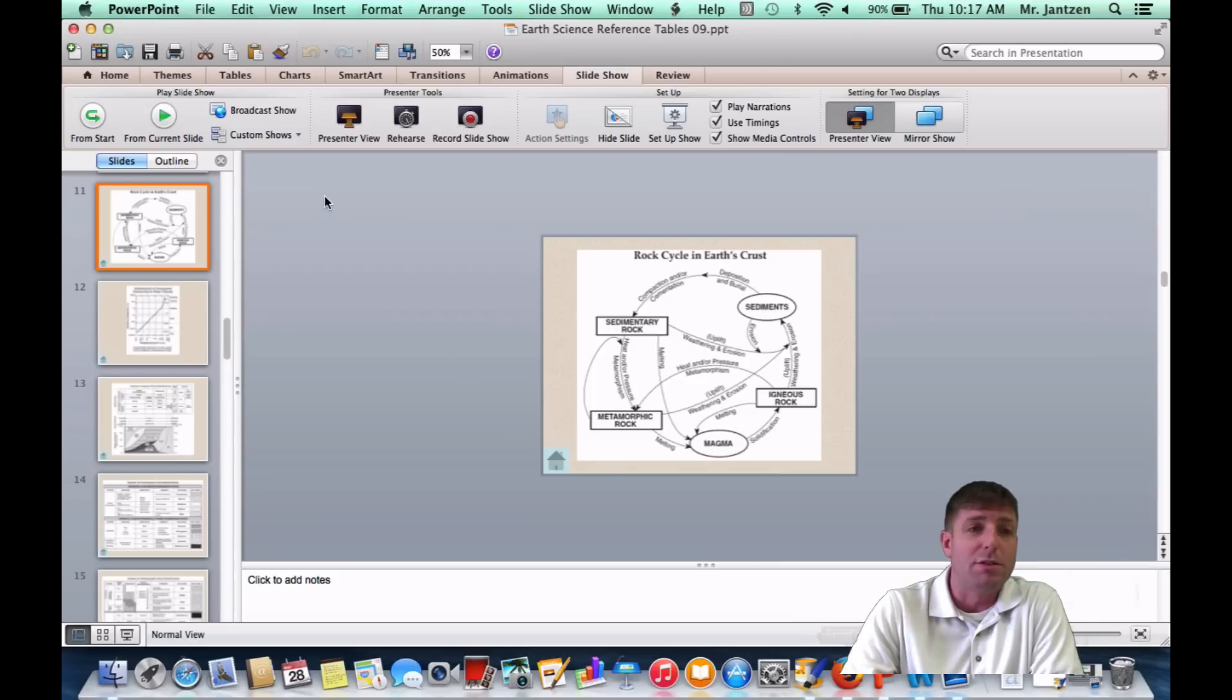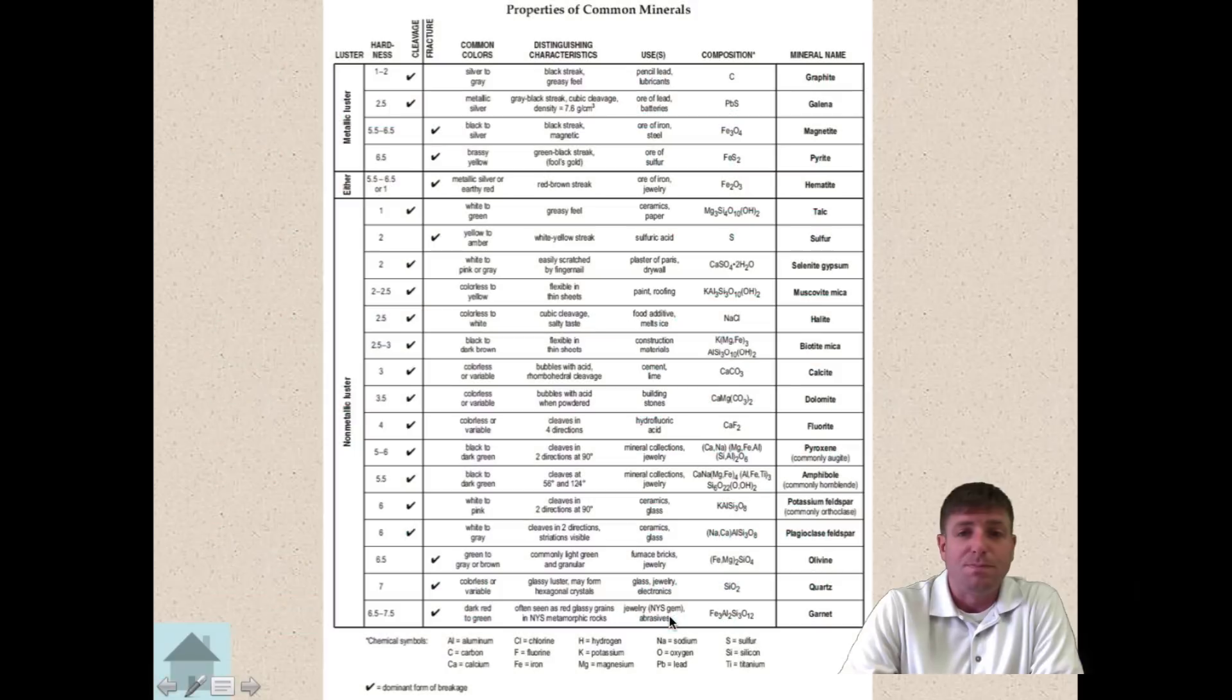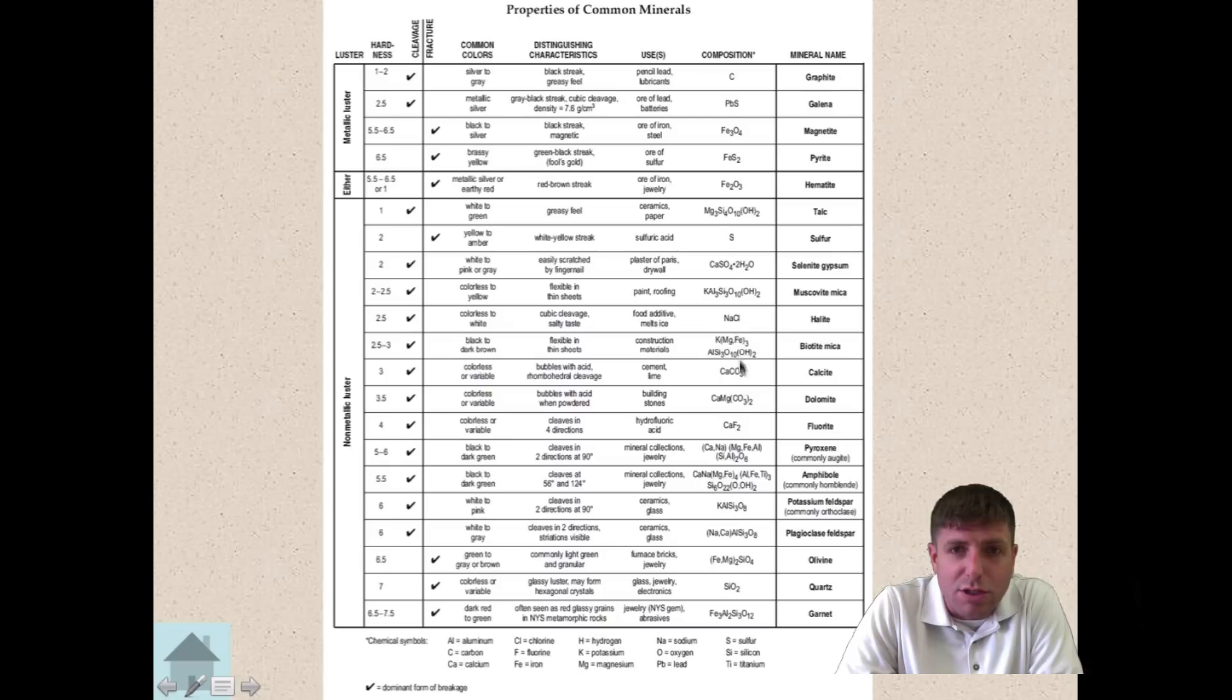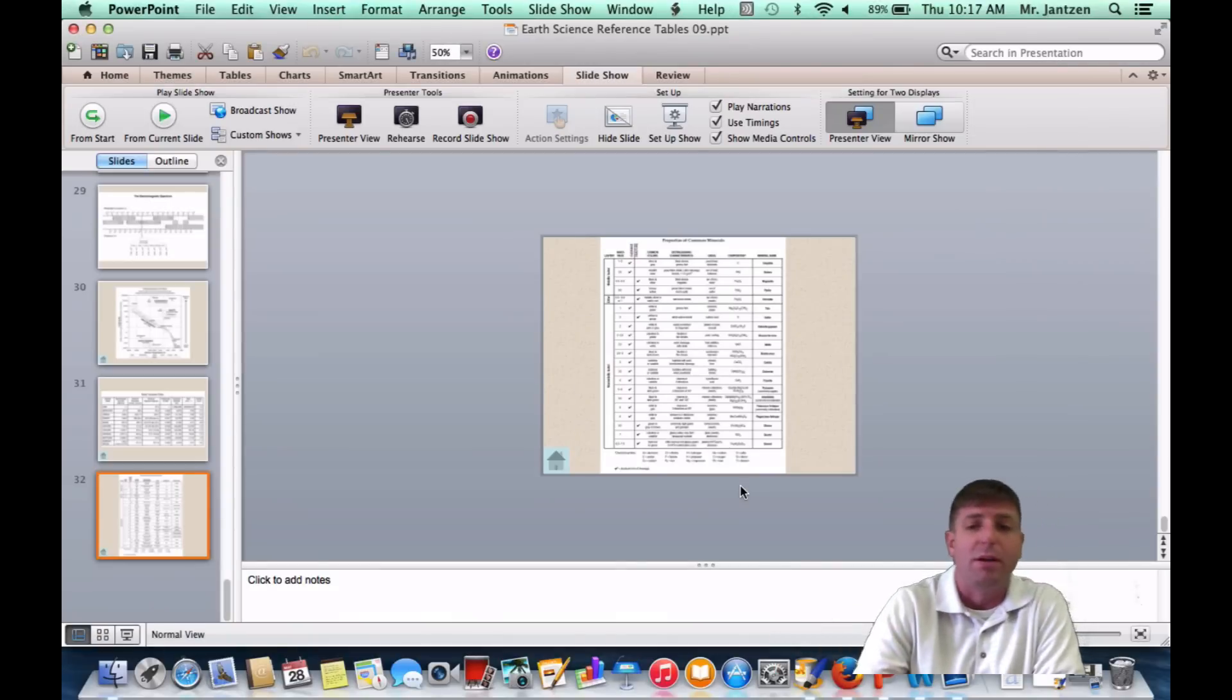And they're actually found mostly in most of the minerals that we are exploring here in Earth's science. So if you look at your reference tables, for example, and you go to your mineral chart, you look at the composition chart, you're going to see silicon and oxygen all over the place. So they're the most abundant.